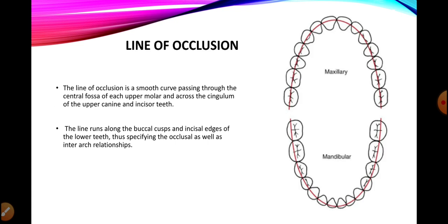Before jumping to the topic of crossbite and its management, I would first like to discuss normal occlusion. Here in the picture we can see a maxillary arch and a mandibular arch. In the maxillary arch, as we move from anterior to posterior, the transverse dimension of the maxilla is increasing from anterior to posterior, and the same goes with the mandible.